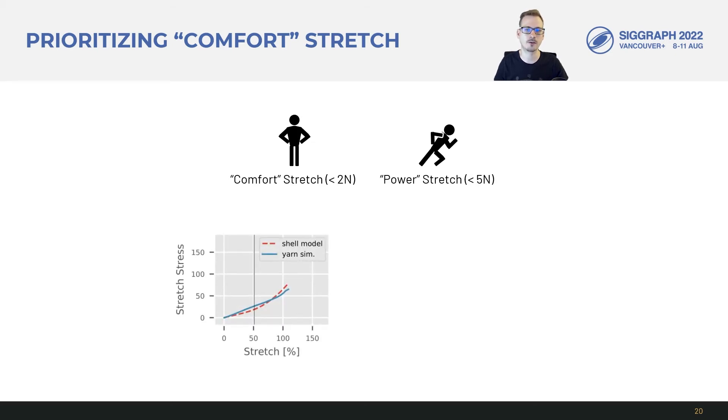Here's an example of a stress over stretch plot. Red is the target shell model and blue is the yarn fit. To the left of the vertical bar we have the comfort regime where we really want to fit the fabrics well and to the right we have the power regime which we would still like to fit well but we weight the errors less. In this case we managed to fit decently well across the entire range.